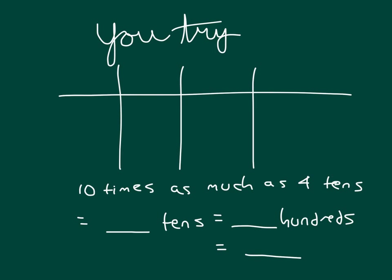Go ahead and work out this problem. If you're looking at 10 times as much as 4 tens, be sure to draw a place value chart, and then complete what this is worth. Go ahead and pause that video. Did you label your place value chart correctly? Basically, when you were making place value disks, did you put 4 tens in here?